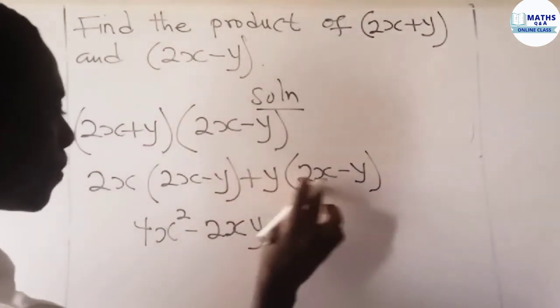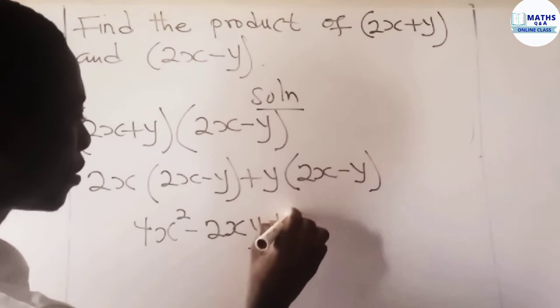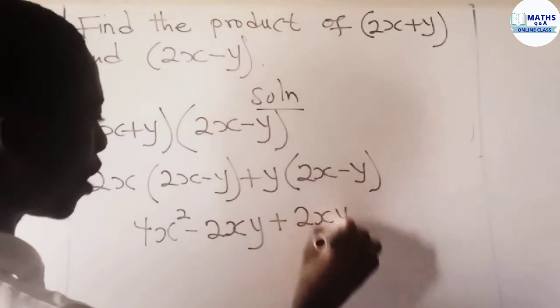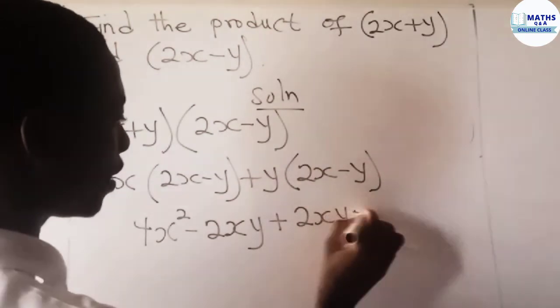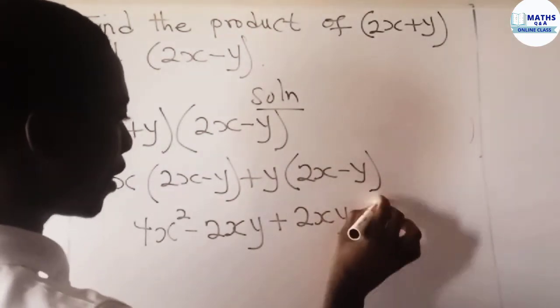Now positive y multiply 2x gives positive 2xy. And then positive y multiply negative y gives negative y squared.